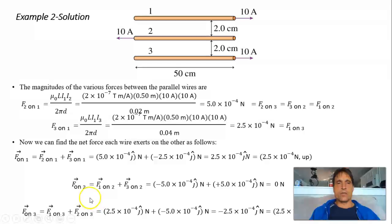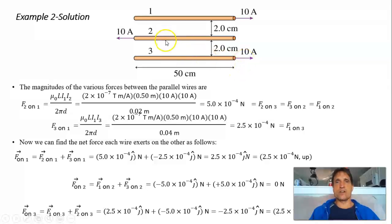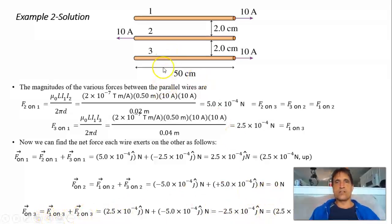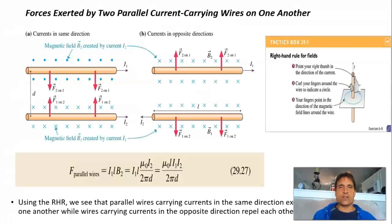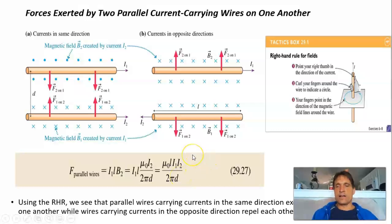For wire two: it experiences a repulsive force due to wire one pointing downward, and a repulsive force due to wire three pointing upward. The forces are the same magnitude and they cancel, so wire two experiences no net force. Wire three experiences forces due to wires one and two, giving a net repulsive force pointing downward. You should be able to apply the parallel wire force equation and get your signs right by knowing that same-direction currents attract and opposite-direction currents repel.